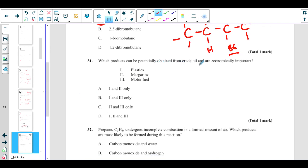Which products can be potentially obtained from crude oil? Plastics yes, can be obtained. Motor fuel can be obtained. Margarine, no, margarine cannot be obtained. So the correct answer is one and three.